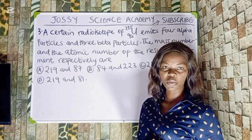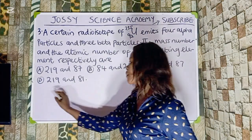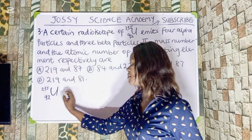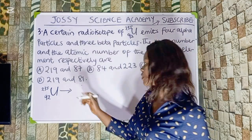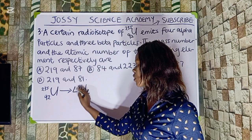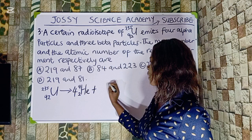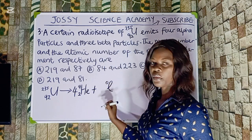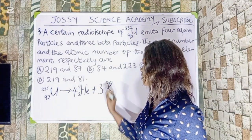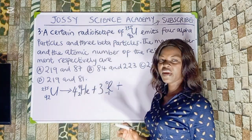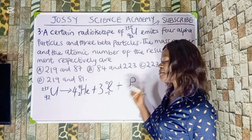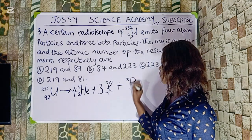To find the mass number and atomic number, we write the nuclear equation. Uranium-235 with atomic number 92 emits 4 alpha particles — each with mass number 4 and atomic number 2 — and 3 beta particles — each with mass number 0 and atomic number minus 1 — plus a new element P with mass number X and atomic number Y. This equation must also involve binding energy.